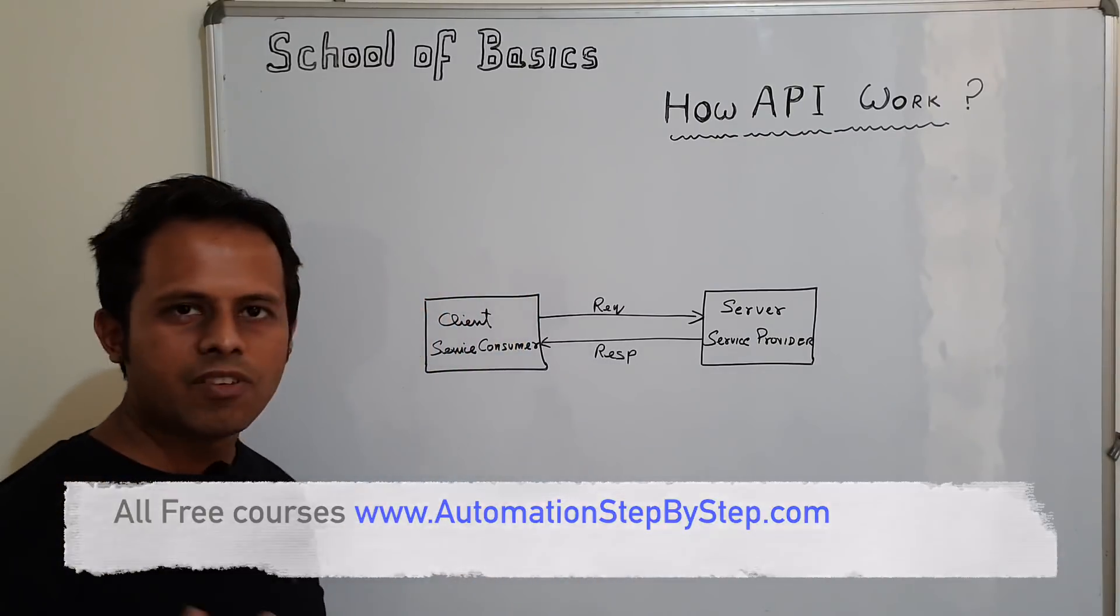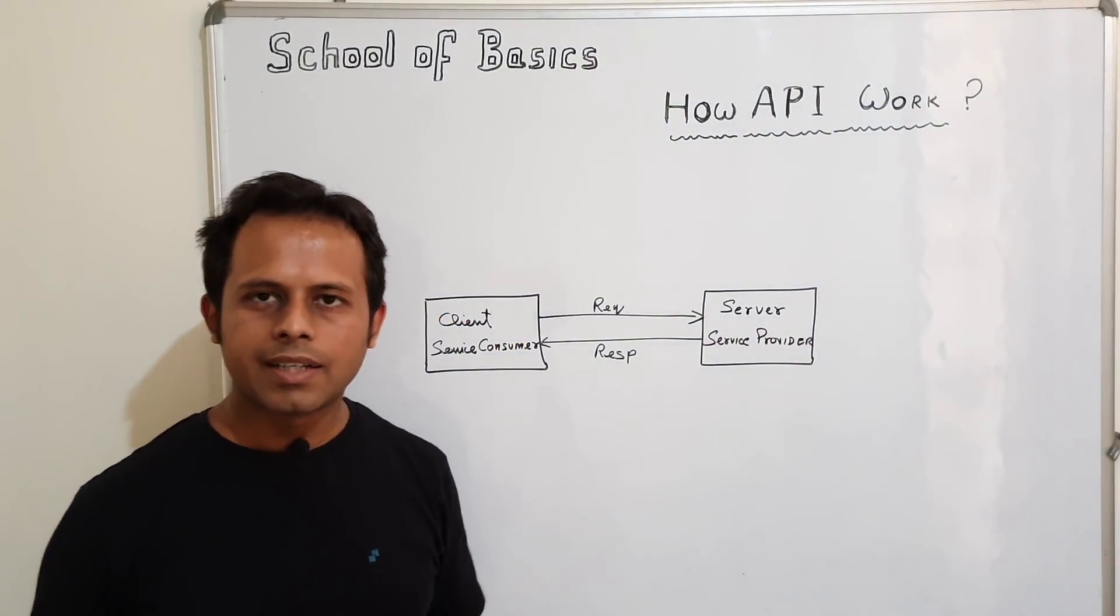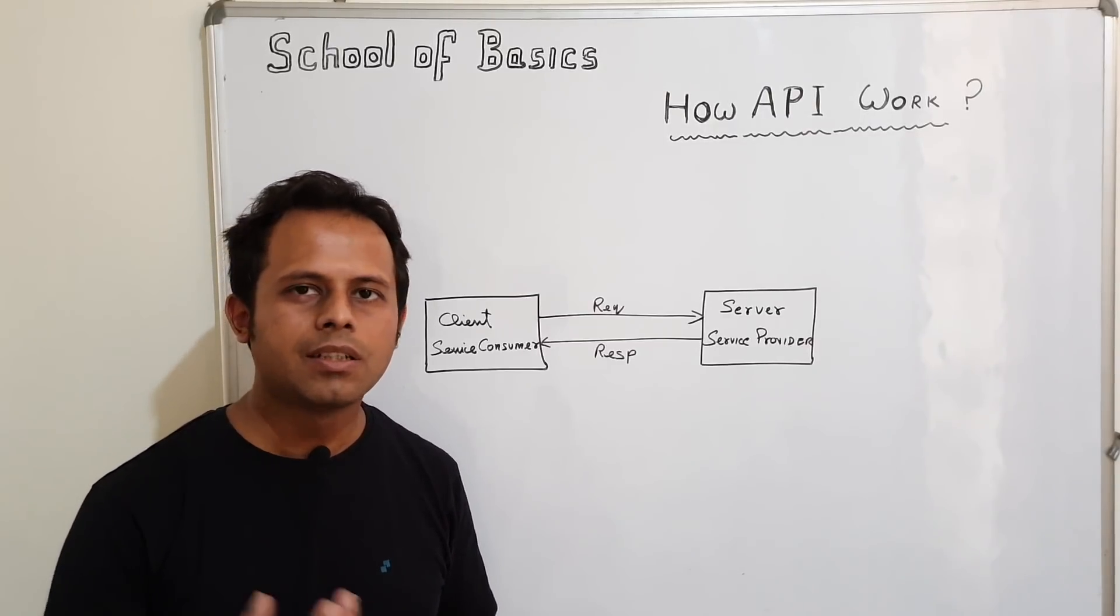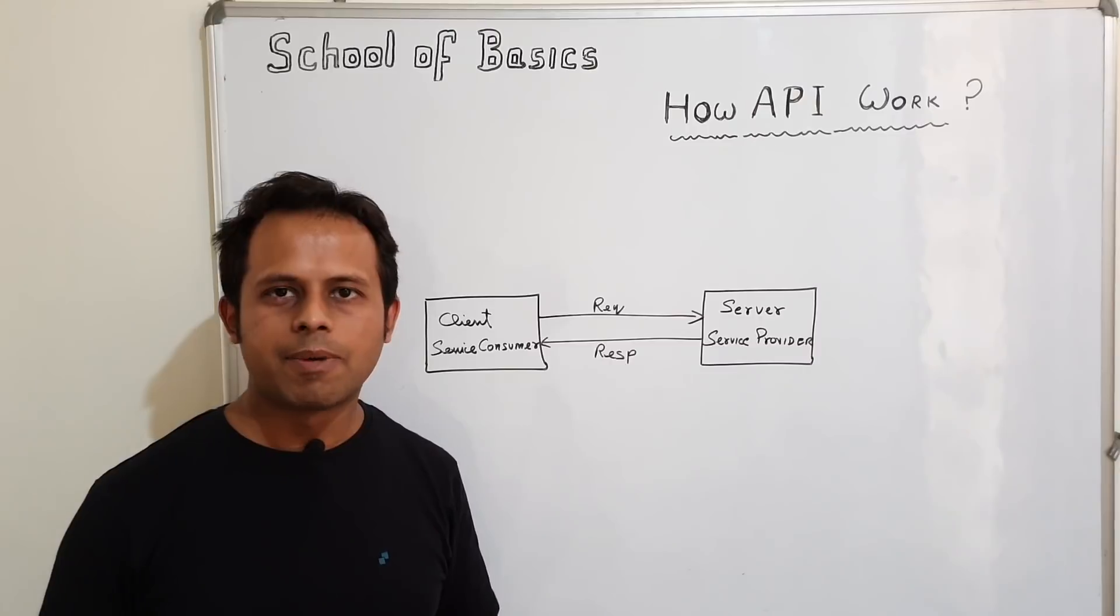So this is the very basic architecture, a client and a server, a service provider and a service consumer. The service consumer will send the request and the service provider will process and send back the response.